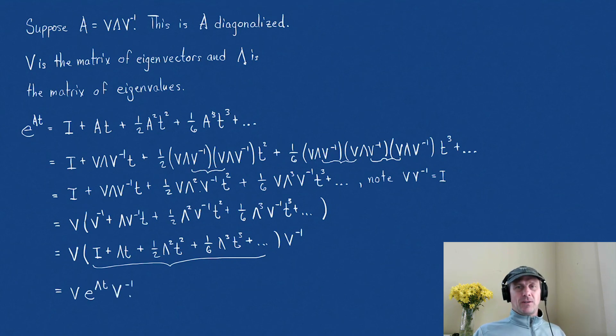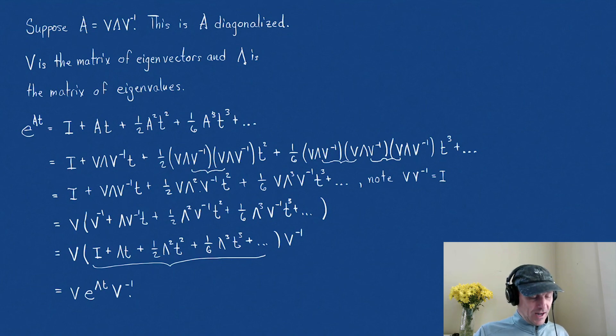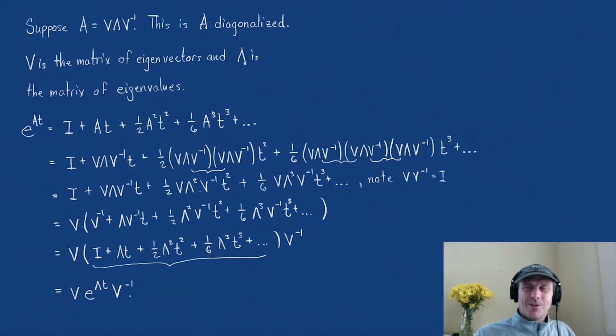And so that's the beauty of being able to diagonalize A — we get E to the A t equals V E to the lambda t V inverse. I hope that helps. Thanks for watching.